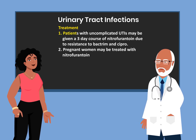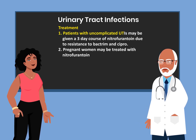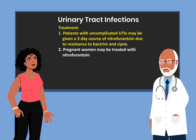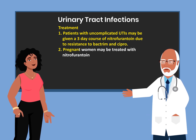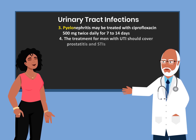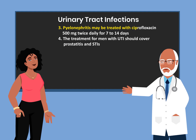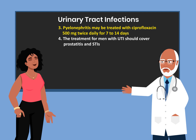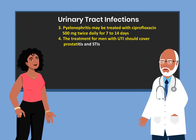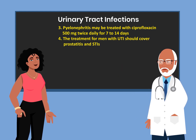Patients with uncomplicated UTIs may be given a three-day course of nitrofurantoin, due to resistance to Bactrim and Cipro. Pregnant women may also be treated with nitrofurantoin. Pyelonephritis may be treated with ciprofloxacin 500 mg twice daily for 7 to 14 days. Treatment for men with UTIs should cover prostatitis and sexually transmitted infections.